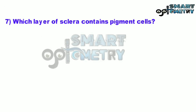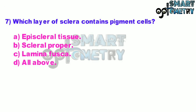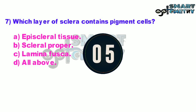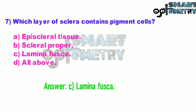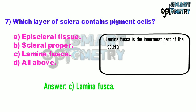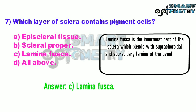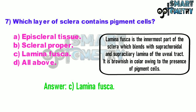Question number seven: which layer of the sclera contains pigment cells? A: episcleral tissue, B: sclera proper, C: lamina fusca, D: all of the above. Lamina fusca is the innermost part of the sclera which blends with the suprachoroidal and supraciliary lamina of the uveal tract. It is brownish in color owing to the presence of pigment cells.